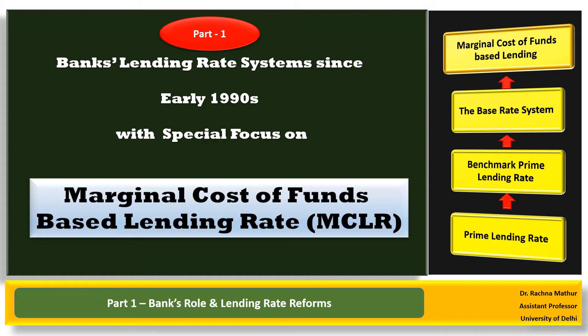To start with MCLR, we will first focus on the role of banks — the central bank and commercial banks together — in the management of liquidity in the economy. Then we will look at the reforms brought in the lending rate system in India since the 1990s, including prime lending rate, benchmark prime lending rate, and base rate system. Finally, we have what exists today: the marginal cost of fund based lending rate. We will also discuss the effects of MCLR on home loan borrowers.